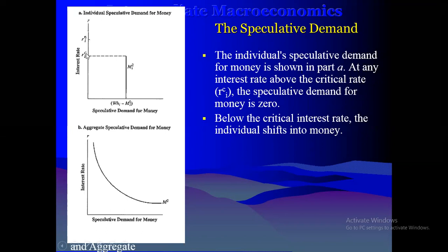What we are trying to look at is the speculative demand for money — how it depends on the level of interest rates. We call this the critical interest rate; it is like a zero line we use to measure whether people are going to hold money or hold bonds. People only hold bonds when the interest rate is high, specifically when it is above this critical interest rate.